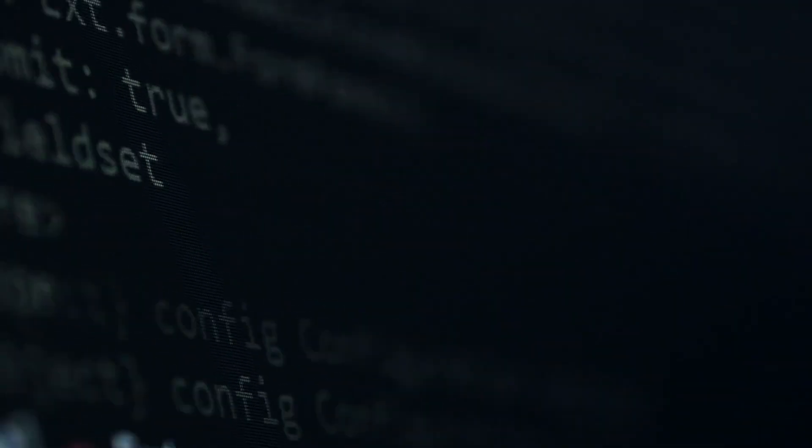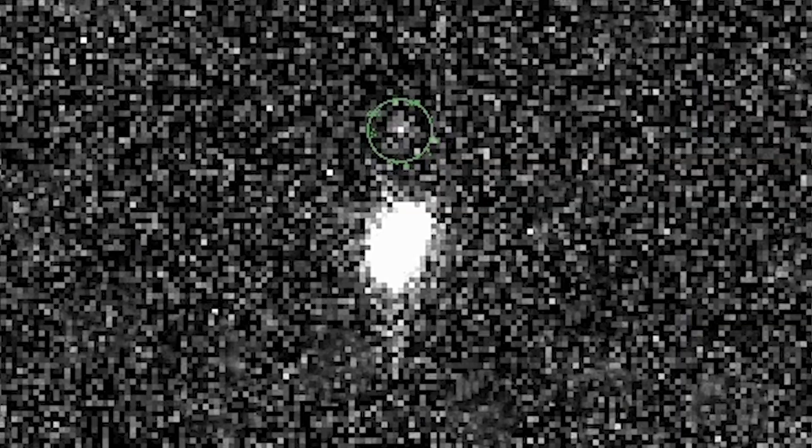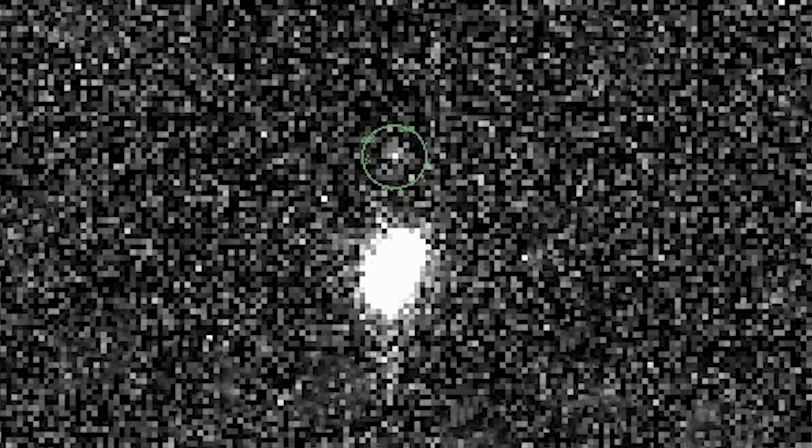After performing computer simulations, the researchers found possible proof that Niku and Drac had been in that orbit for hundreds of millions of years. It is still unknown why these six objects cluster together, despite being so far away from each other.